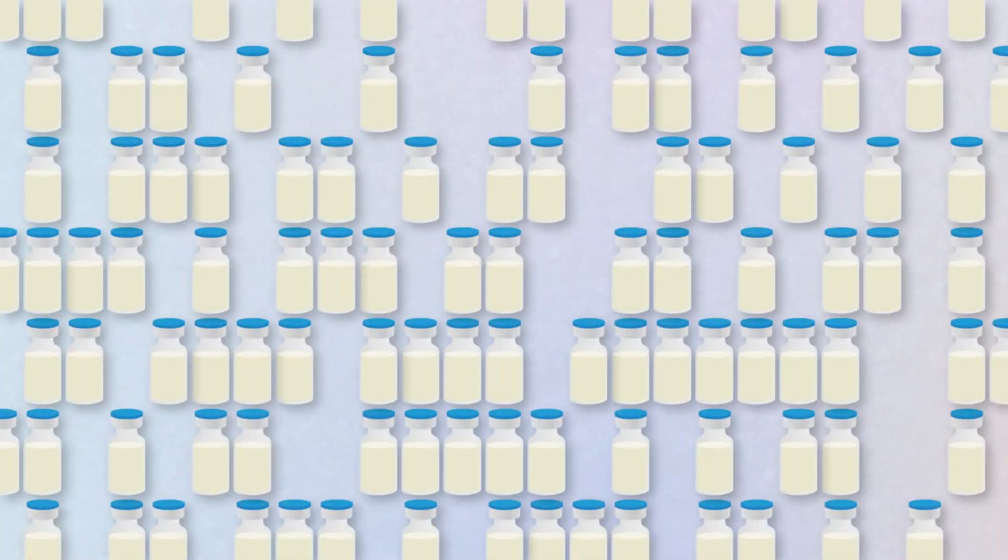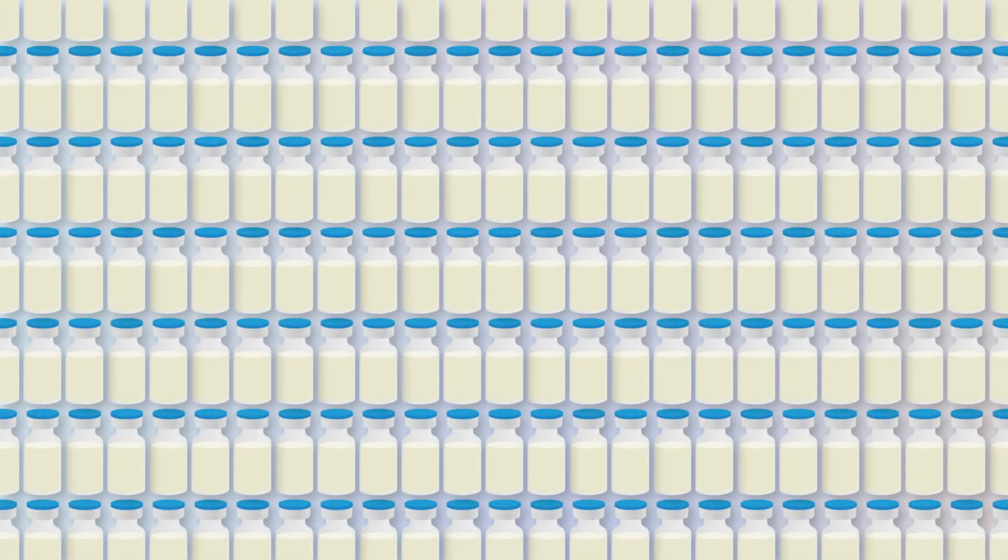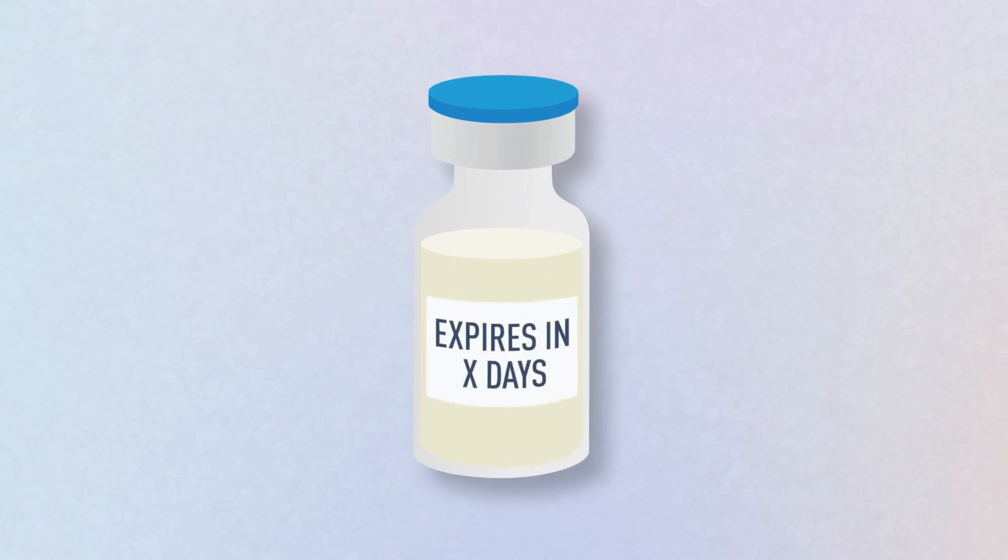RNA vaccines can be made in large quantities, in a matter of days, at relatively low cost. However, they expire quickly and must be stored at extremely low temperatures, making distribution difficult.